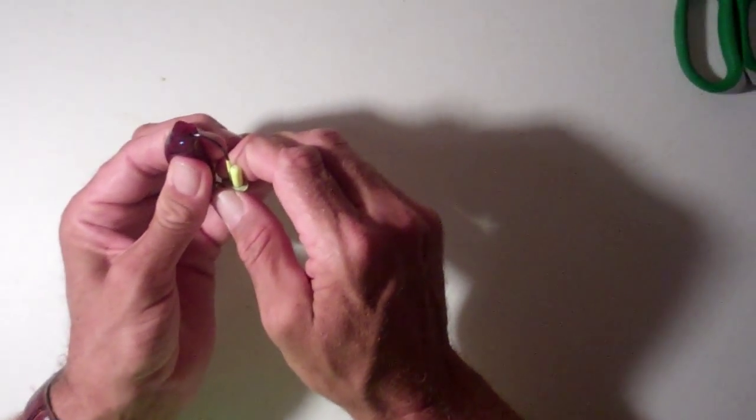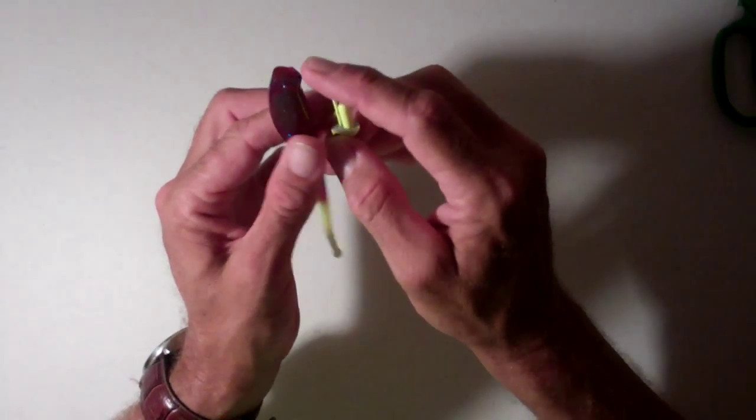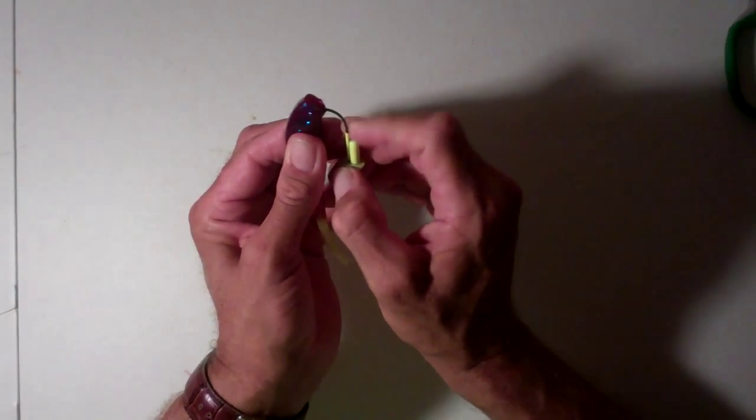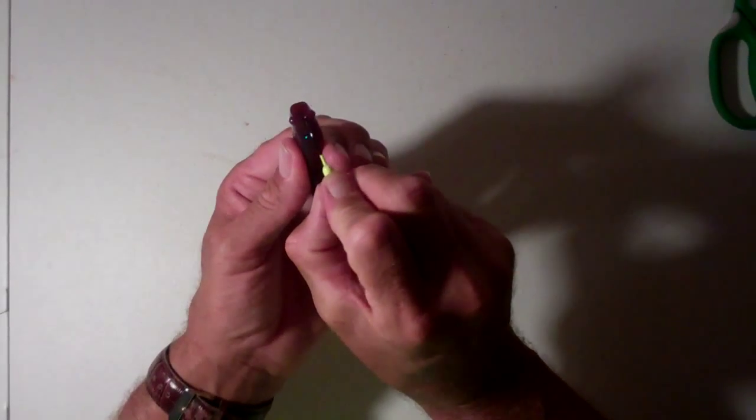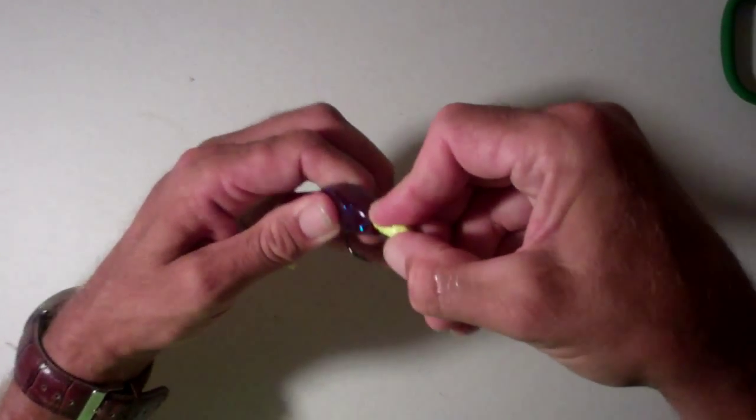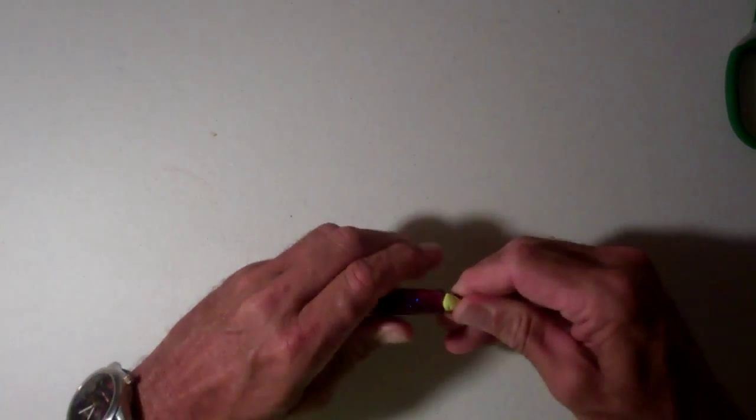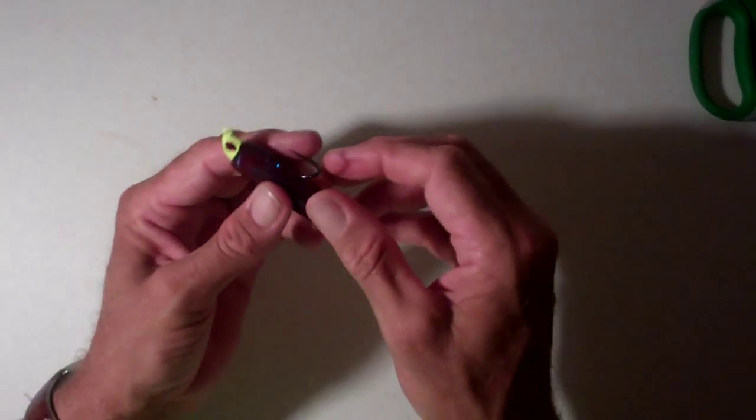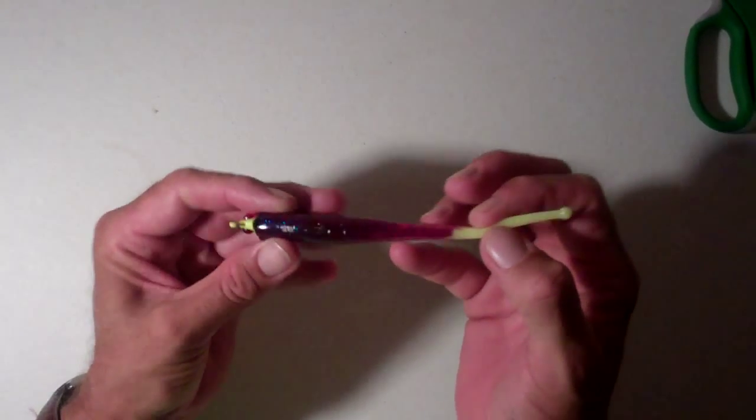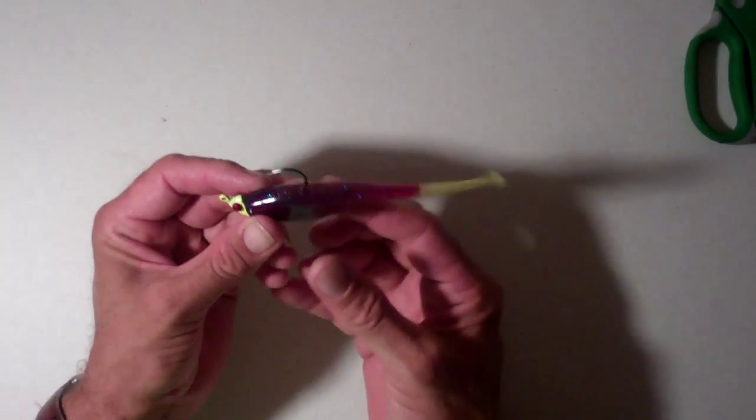You're going to want to come on down. The plastic is going to turn on the hook right there on the curve, and you're going to want to bring that right on out, get behind it, and push it right up behind the head. And that is how you rig a Kelly Wiggler Ball Tail.